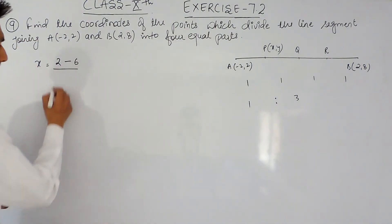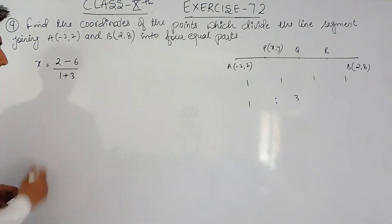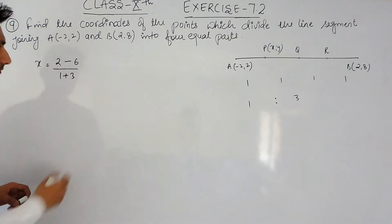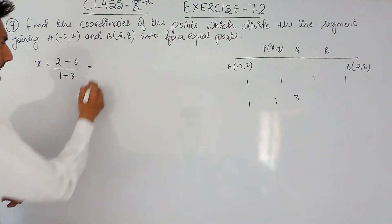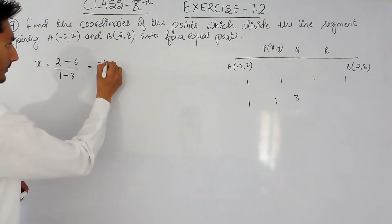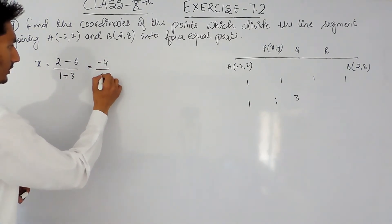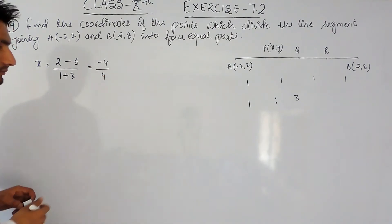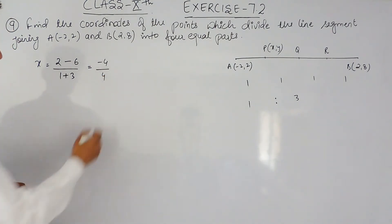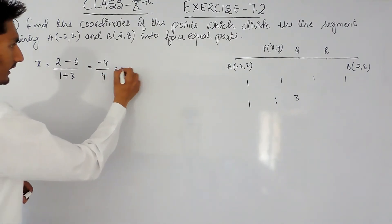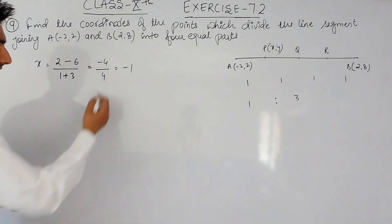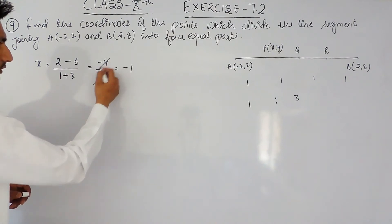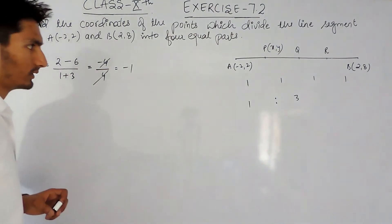In the denominator I have to add these two values, that is 1 plus 3. Solving this: the numerator is 2 plus minus 6, which gives minus 4, and dividing by 4 gives minus 1. So the x coordinate of P is minus 1.